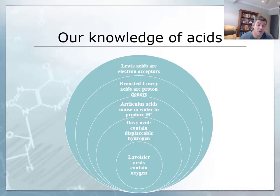The earliest ideas about acids came from Antoine Lavoisier, who proposed that acids are substances that contain oxygen. If we look at a substance like sulfuric acid, it is an acid and does contain oxygen.